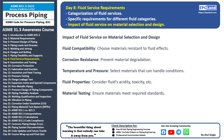Fluid compatibility: it's essential to select materials that are compatible with the fluid being transported — this prevents material deterioration, leaks, and other potential issues. Corrosion resistance: depending on the fluid's properties, corrosion can be a major concern. Choosing corrosion-resistant materials helps maintain the integrity of the piping system. Temperature and pressure: the temperature and pressure of the fluid can influence material selection — materials must be able to withstand these conditions without failure.